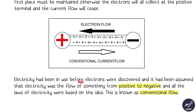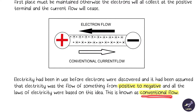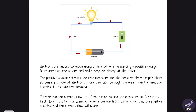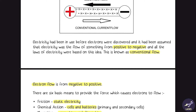Electricity was in use even before electrons were discovered. It had been assumed that electricity was the flow of something — from positive to negative — and all the laws of electricity were based on this idea. This assumed direction is known as conventional flow: positive to negative. But the actual electron flow, as we saw, is from negative to positive.